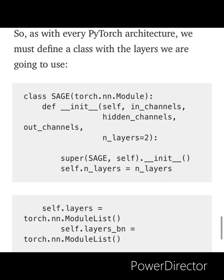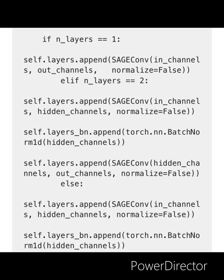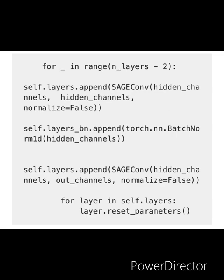As with every PyTorch architecture, we need to define a class with the number of layers. Two layers are sufficient in our case. We have used these two layers for the module list. If the number of layers equals 1, we append that list and normalize it. The self.layers function keeps repeating this until the normalization step is achieved, or as long as the normalization value remains false.